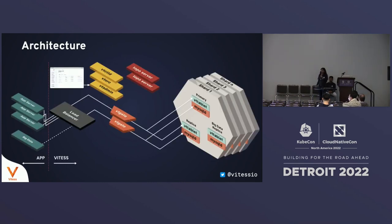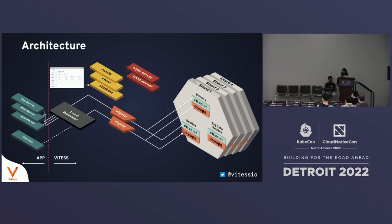We'll now get a brief overview of the architecture of Vitess. Clients talk to Vitess through a proxy called VTGate, which receives client requests — either MySQL or gRPC — and routes them appropriately to the backend MySQLs. In a sharded Vitess system, you may have multiple shards, but in each shard there is a primary MySQL and one or more replicas, and VTGate figures out which shard to route to.